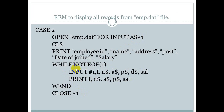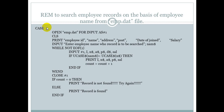For Case 3, we search employee records on the basis of employee name from emp.dat file. First, we open the file in input mode. A PRINT statement displays the header — that means the field names of the data file. Then we input the employee name whose record is to be searched into variable num dollar. You should enter any keyword in order to search the records.